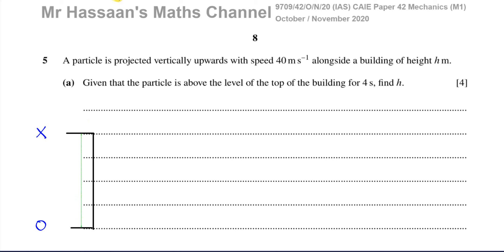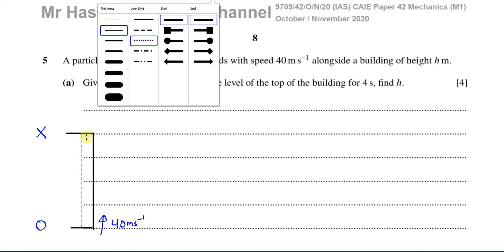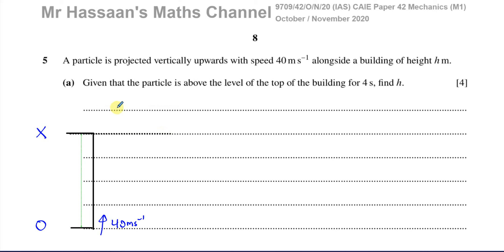We know that at this level it was projected upwards with a speed of 40 meters per second, and it got to this level X and fell back down again. The time for which it was above the top of the building was 4 seconds. Let's say it got to this level at time 1 on the way up, and let's call that time 2 on the way down. We know that the difference between time 2 and time 1 is 4 seconds — it's 4 seconds it was above that level. That's h, the height of the building.